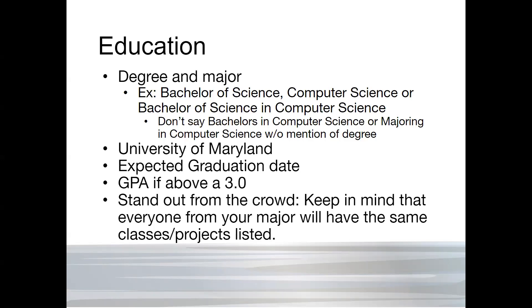If you have a GPA over 3.0, I highly recommend listing it. If you don't, it's up to you. If it's under 3.0 and they're concerned about GPA and you don't list it, my guess is if they're willing to consider someone under 3.0, they'll ask, which opens the door for a conversation about why it's a bit lower — versus them seeing a 2.6 and moving on without giving you a chance to explain.